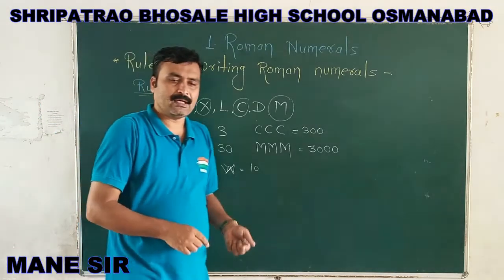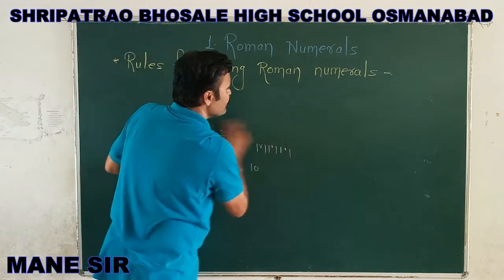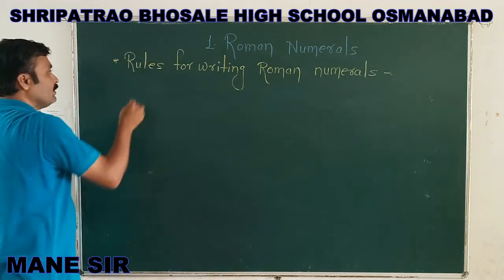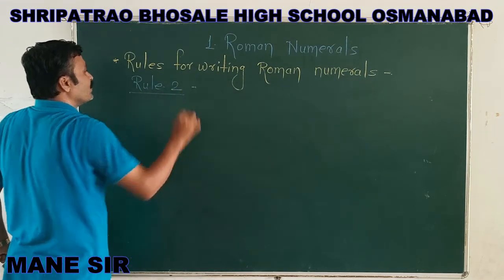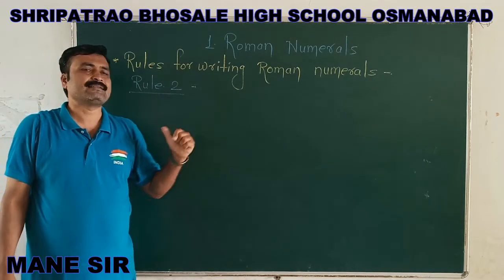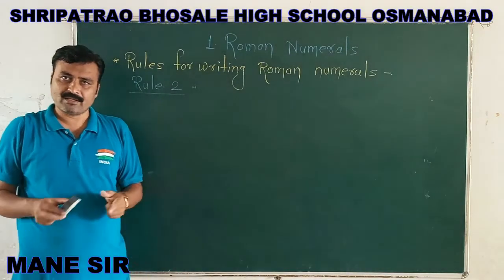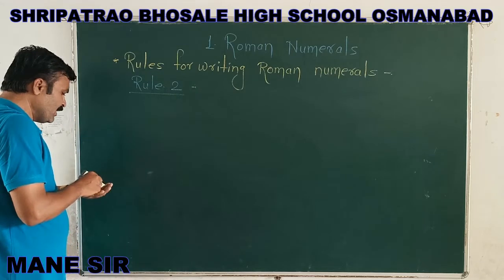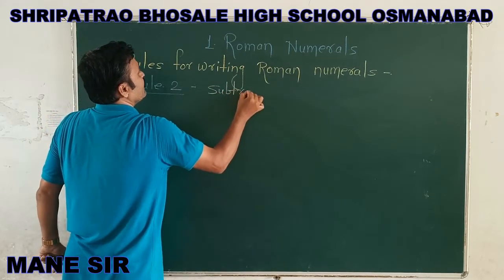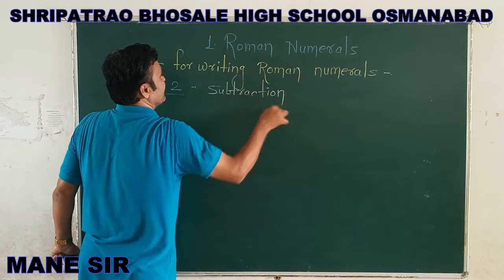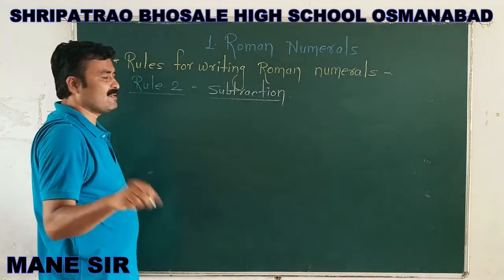After Rule Number 1, we are now dealing with Rule Number 2. Rule Number 2 and its next sequence, Rule Number 3, are parallel and exactly opposite to each other. In Roman numerals, Rule Number 2 involves the subtraction method. Before stating the rule, I am taking one example in front of you.